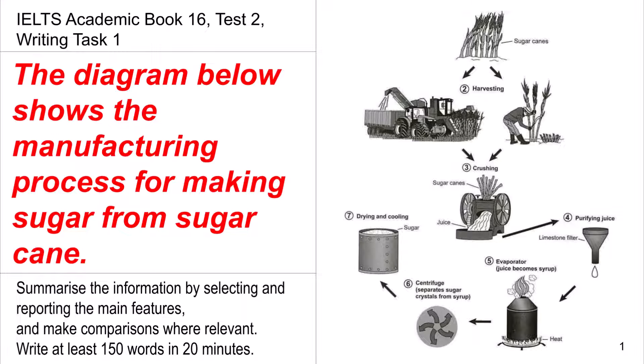Today, we are going to be discussing the IELTS Academic Book 16 Test 2, Writing Task 1. The diagram below shows the manufacturing process for making sugar from sugarcane.